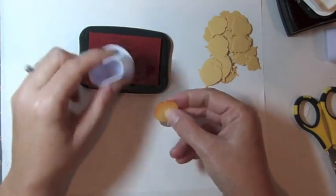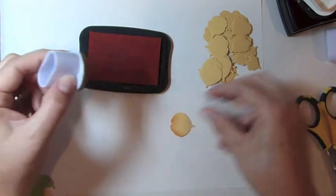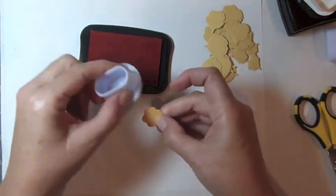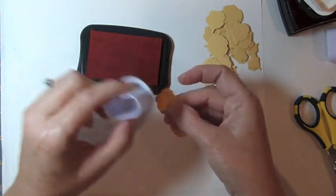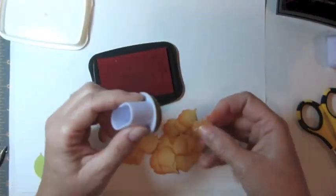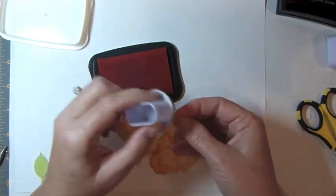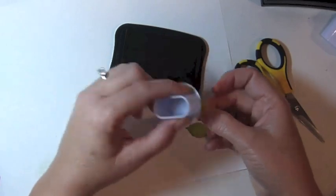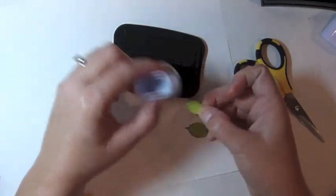To give the flower even greater dimension, apply yellow ink to the edges of each petal using a sponge dauber or other ink applicator tool. Apply green ink to the leaves.